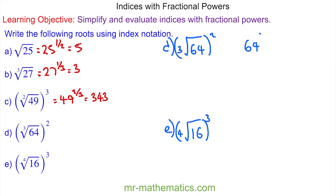So 64 to the power of two thirds. 64 to the power of one third is four, and four squared is 16. For question e, we have 16 to the power of three quarters. 16 to the quarter is two, and two cubed is eight.